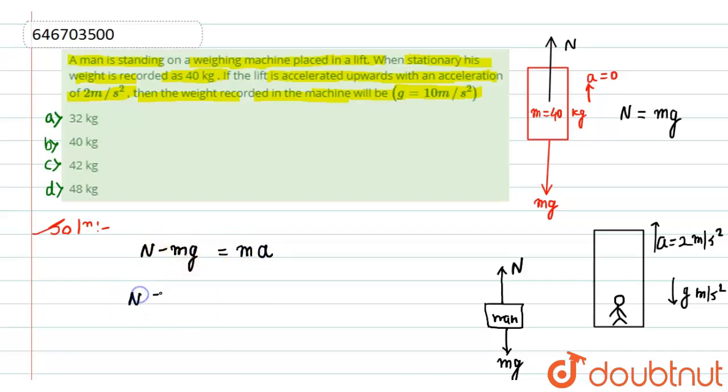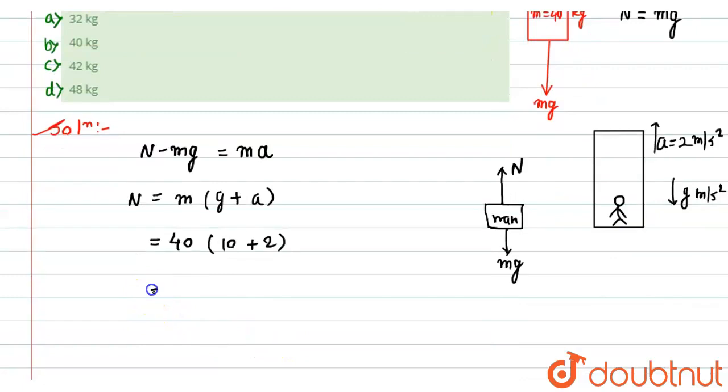So from here the normal reaction N will become equal to m can be taken as common, it would become g plus a. Now we simply put here the values, that is m is 40, g is 10 meters per second squared, a is 2 meters per second squared.